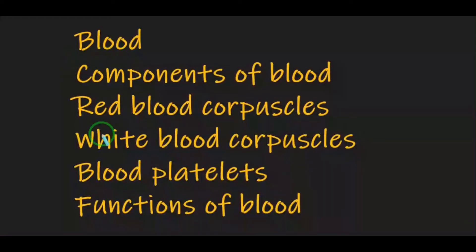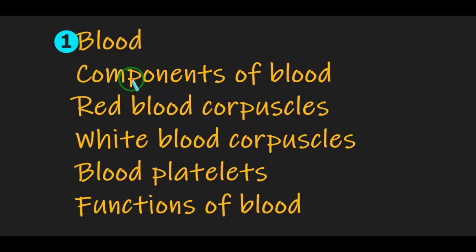In the previous class, these are the topics we discussed. First we discussed about blood — what is blood? Blood is the main circulatory medium in the human body. It is red in color and it is a connective tissue. Then we also discussed the components of blood: plasma and formed elements. Formed elements, another name, is blood cells.